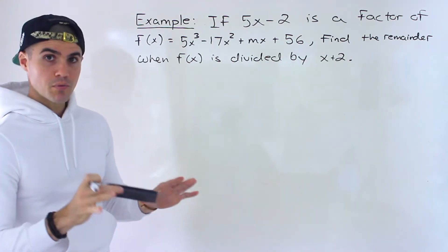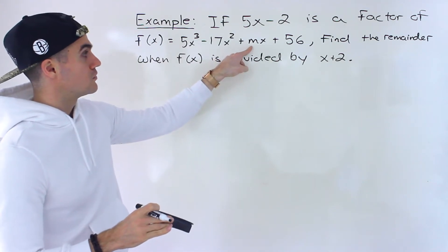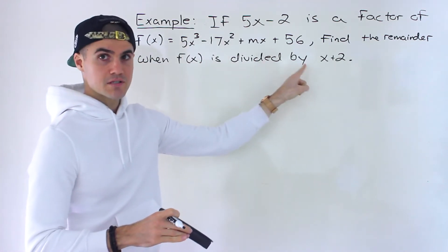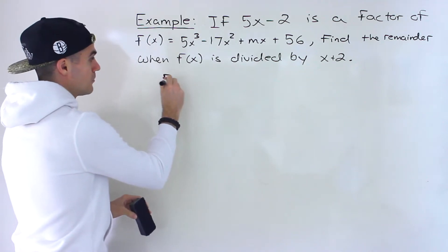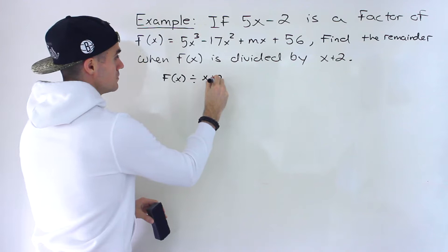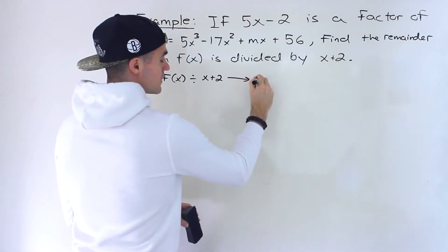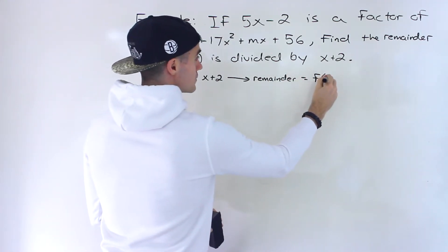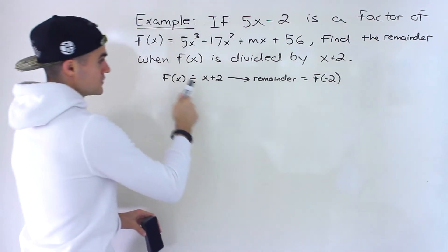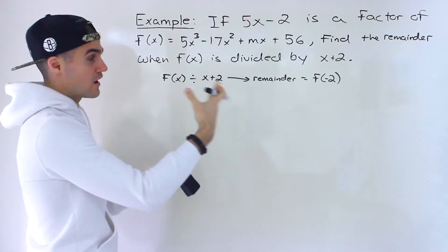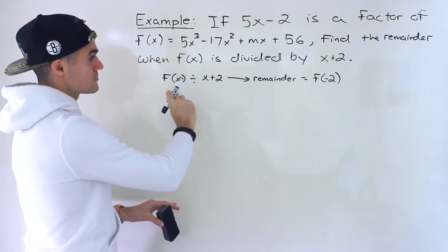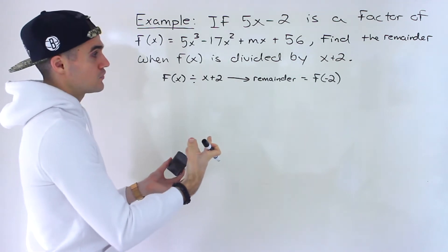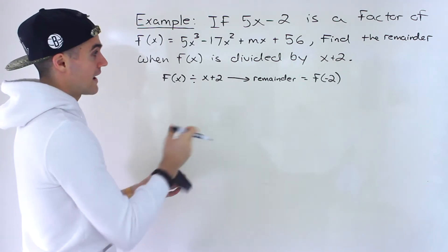Notice that in this particular polynomial there's an unknown value m. Ultimately what we have to do is find the remainder when that polynomial is divided by x plus 2. By the remainder theorem, if we take any polynomial and divide it by x plus 2, the remainder is going to equal f of negative 2. But we can't do that right away because of this unknown value — we'd get an expression in terms of m, and we want an actual number as the final answer.